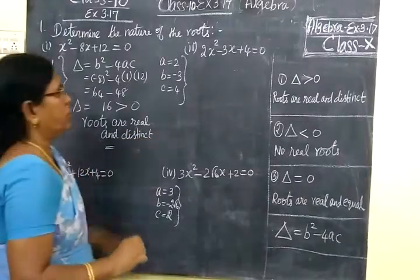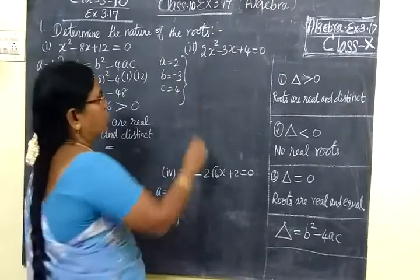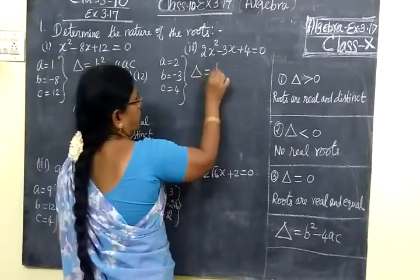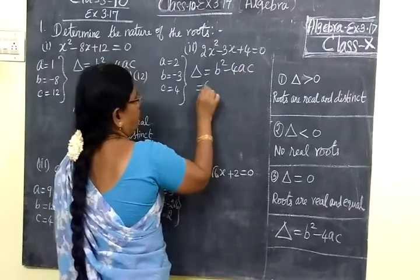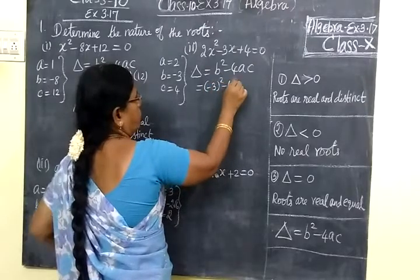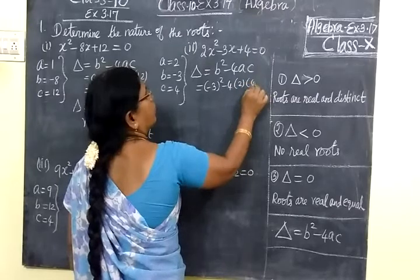Next one. a = 2, b = -3, c = 4. Here also we are writing Δ = b² - 4ac. So b is (-3)² minus 4 into a which is 2, then c is 4.